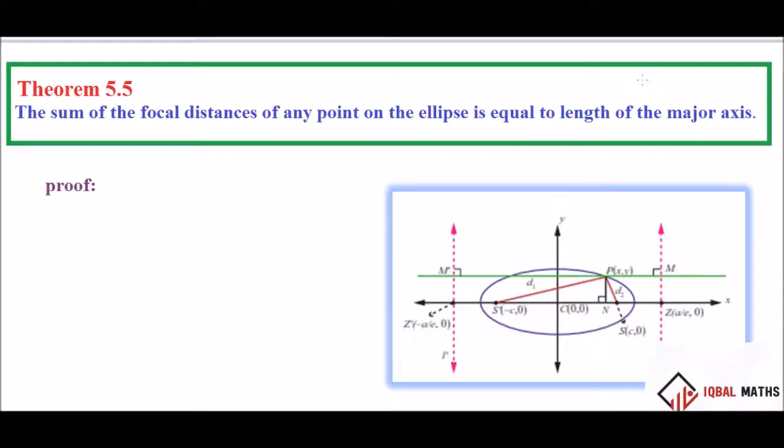Hello students, this is Iqbal here on 5.5 ParkGround. The sum of the focal distances of any point on the ellipse — focal distance.